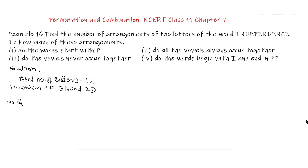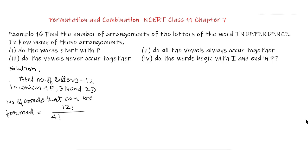Our solution to this question: there are 12 letters in the word INDEPENDENCE, in which there are 4E, 3N, and 2D. So the number of words that can be formed equals 12 factorial upon 4 factorial into 3 factorial into 2 factorial.